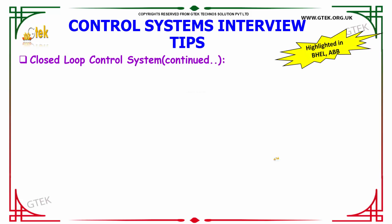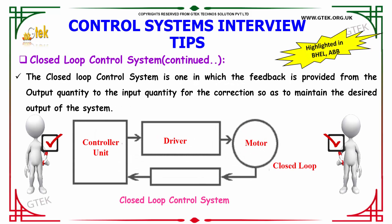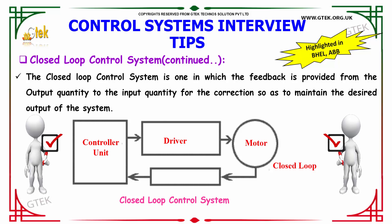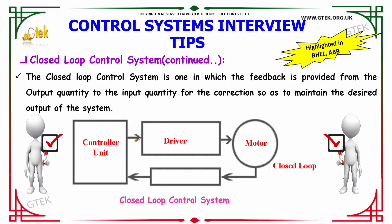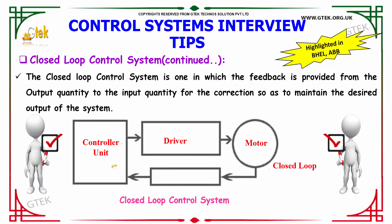In terms of the closed loop control system, these are systems in which feedback is provided from the output quantity to the input quantity for correction, so as to maintain the desired output of the system. You can see the depiction of the closed loop control system over here.